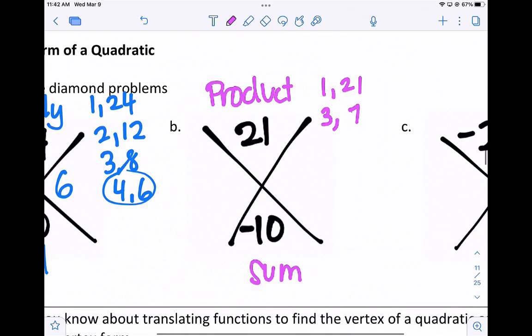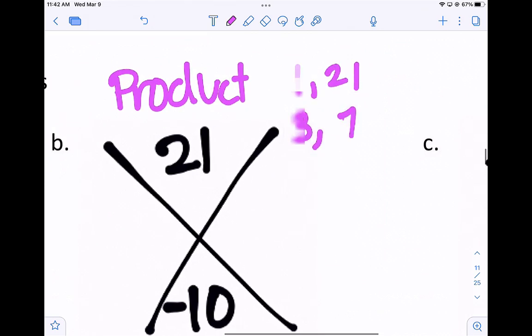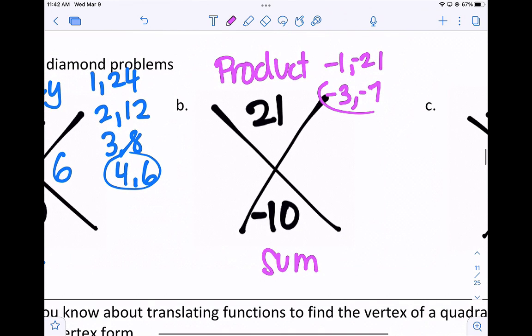Since the top is positive and the bottom is negative, I have to make both numbers negative. And here's the combination that multiplies to a positive 21 that adds to a negative 10. So negative 3 and negative 7 would work in the diamond problem.